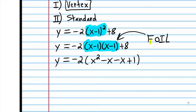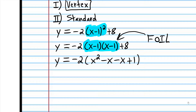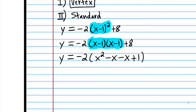So that was: first terms, x times x; outside terms, x times negative 1; inside terms, negative 1 times x; and last terms, negative 1 times negative 1. If you need a review on FOIL, you can go to my beginning algebra course where it talks about multiplying binomials. We still have that 8 out there, so I have to remember to write that 8.